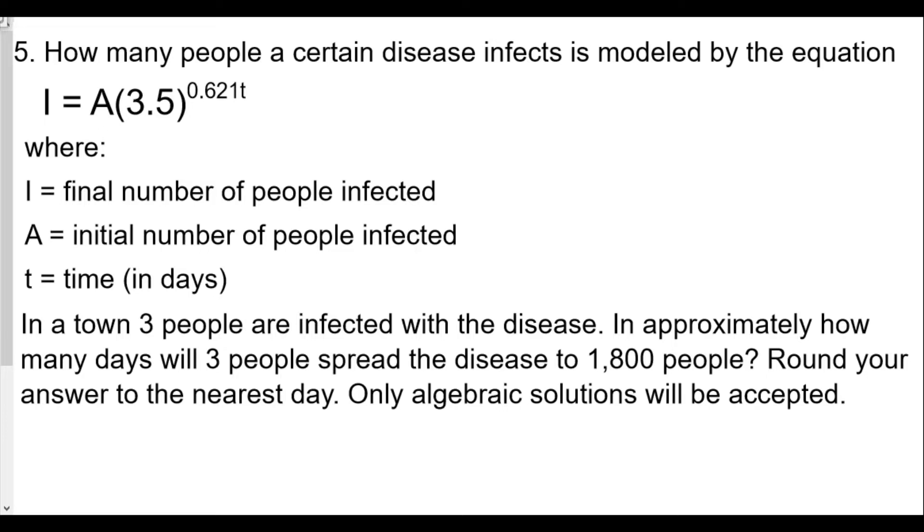So the first thing we see, in this case our initial value of people who are infected, A, is three. We're looking for in approximately how many days, which means we're not sure, so our t value will be the variable. And finally, will it spread to 1,800 people? That's our final number of people infected, I = 1,800.